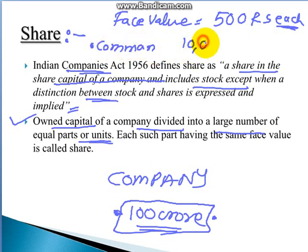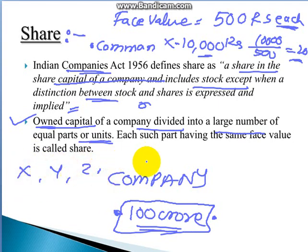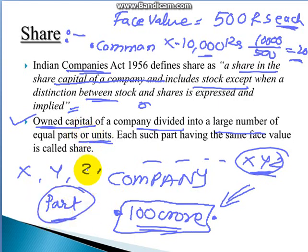If my financial capacity as a common man is 10,000 rupees, I divide 10,000 by 500 and am able to purchase 20 shares, becoming a part-owner of the company. Similarly, persons X, Y, Z, and many others come together and collectively raise the 100 crore rupees of capital required for the company.